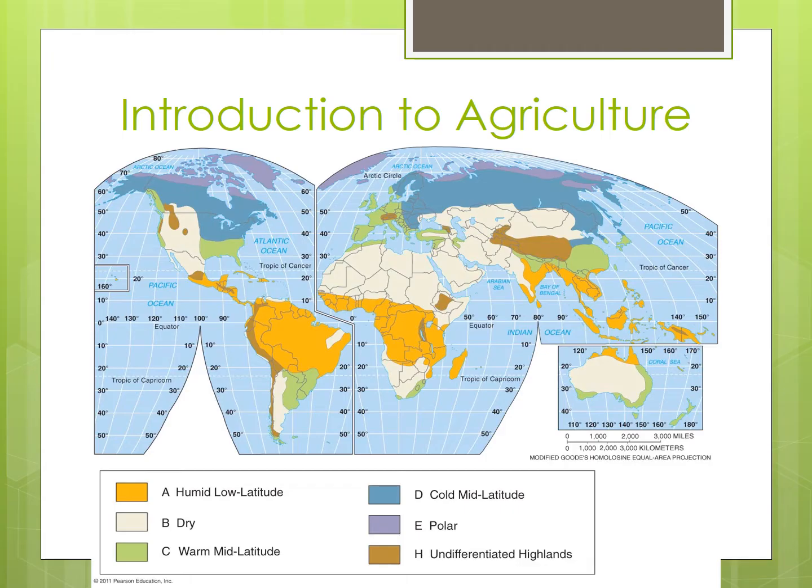Topography, or an area's landforms or features, can impact agricultural activities. This includes whether land is flat, which is ideal for agriculture, or sloped, which typically isn't. Mountains, ridges, and hills limit agricultural activity and often require more human modification in order to make the land suitable for agricultural production.